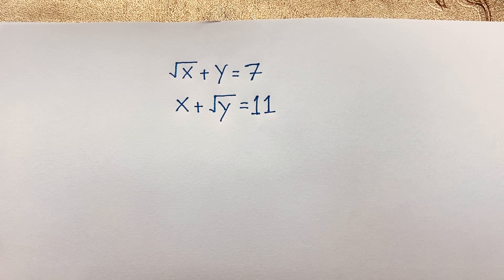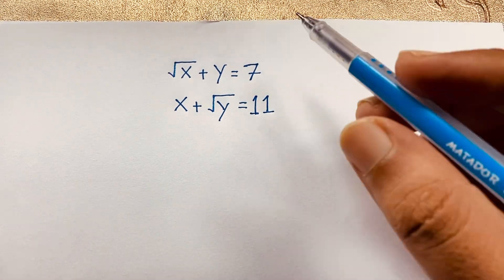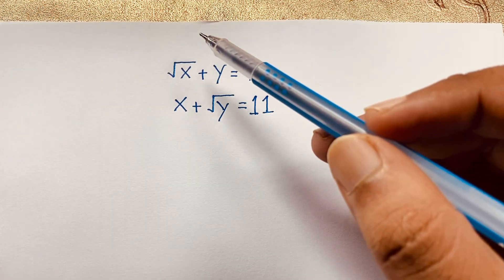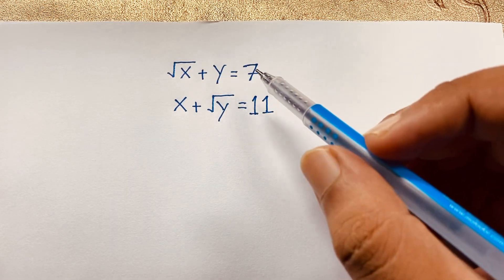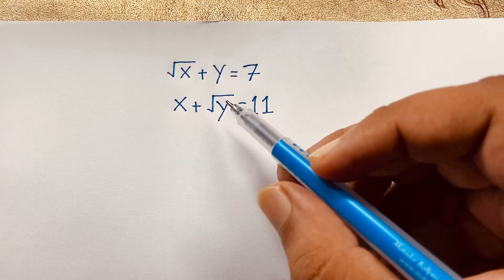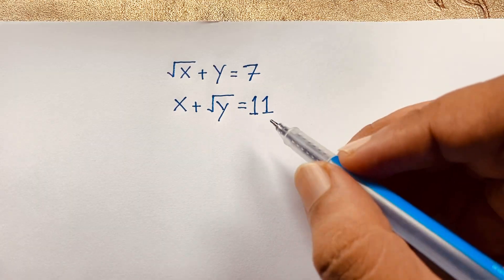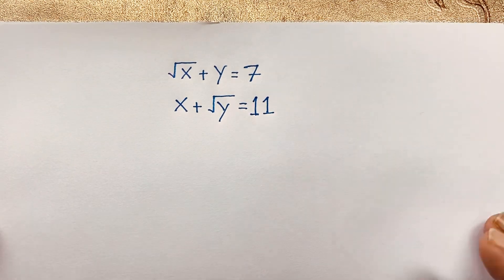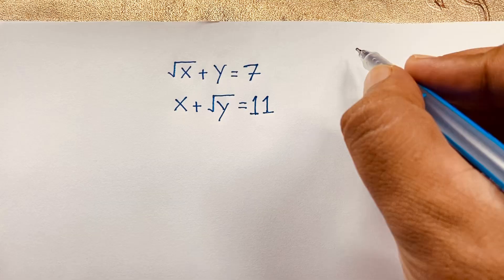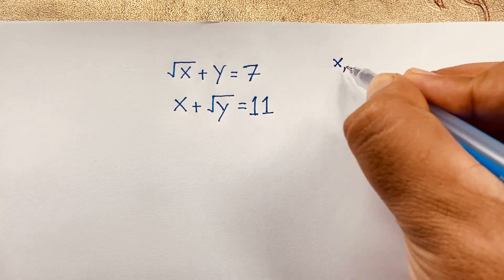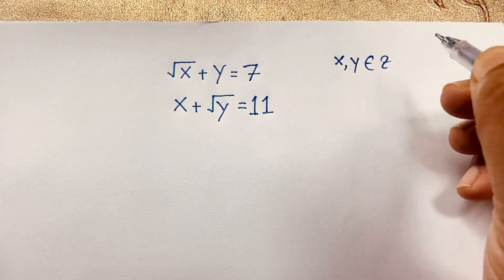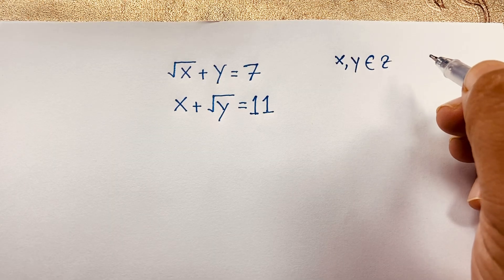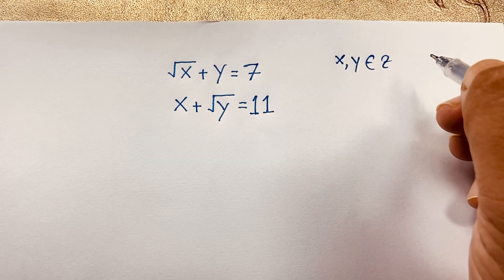Hello everyone, welcome to Russia's Classroom. Today we are solving a tricky math question for fun. Here is: square root of x plus y equals 7, x plus square root of y equals 11. What is x and y? Remember that x and y are positive integers.